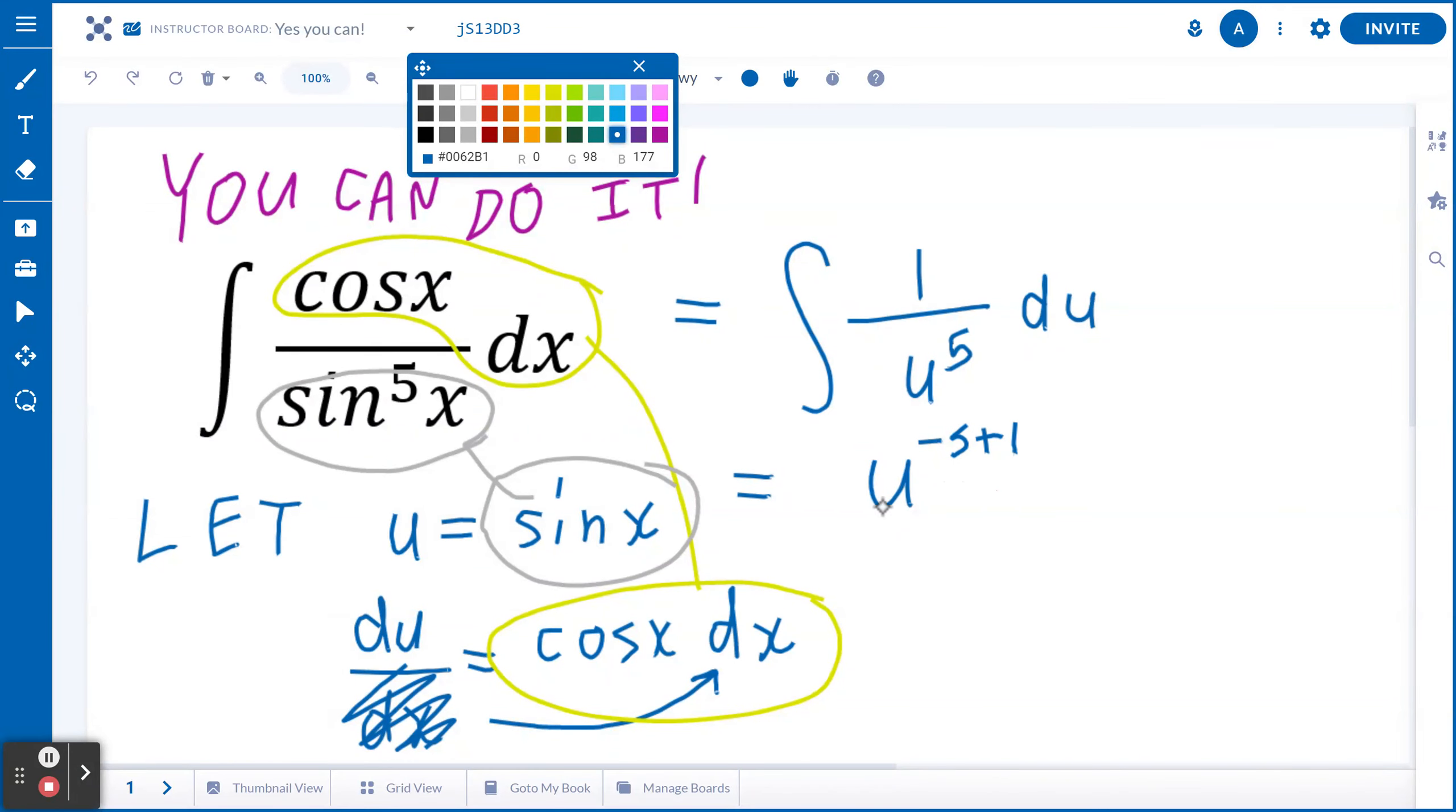Again, you're adding 1 to the new exponent. Negative 5 plus 1 is negative 4. So dividing by negative 4, don't forget you're adding a constant c.